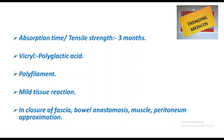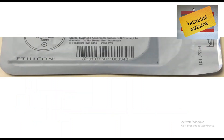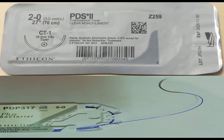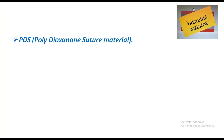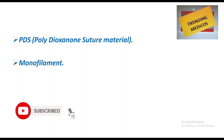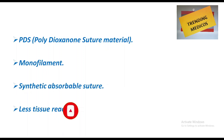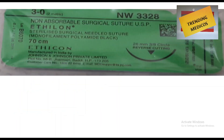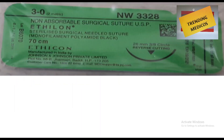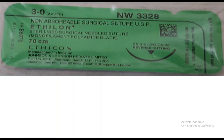Vicryl is purple in color with an absorption time of three months. Vicryl is also known as polyglactin acid and is a polyfilament suture. It causes mild tissue reaction and is used in closure of fascia, bowel anastomosis, muscle, and peritoneum approximation.